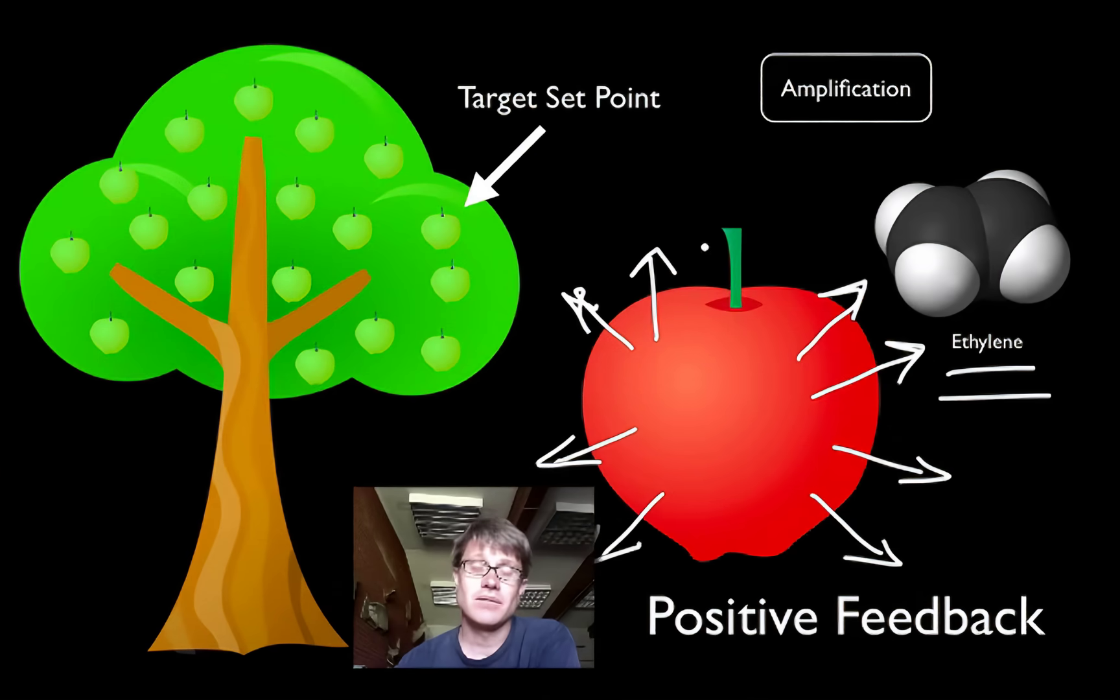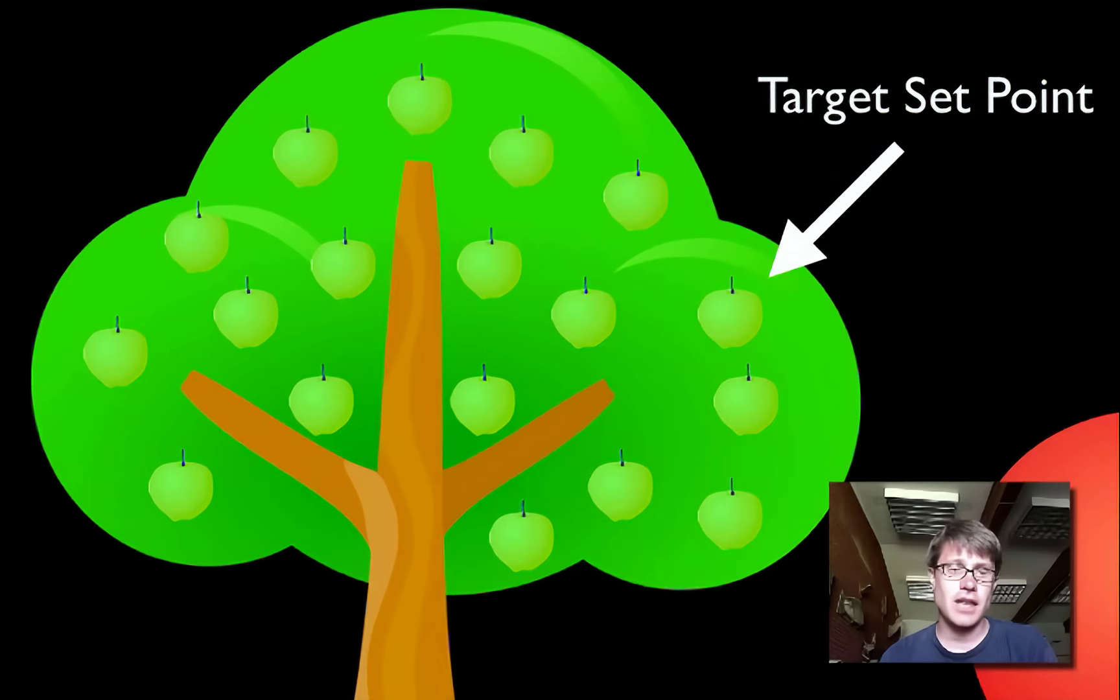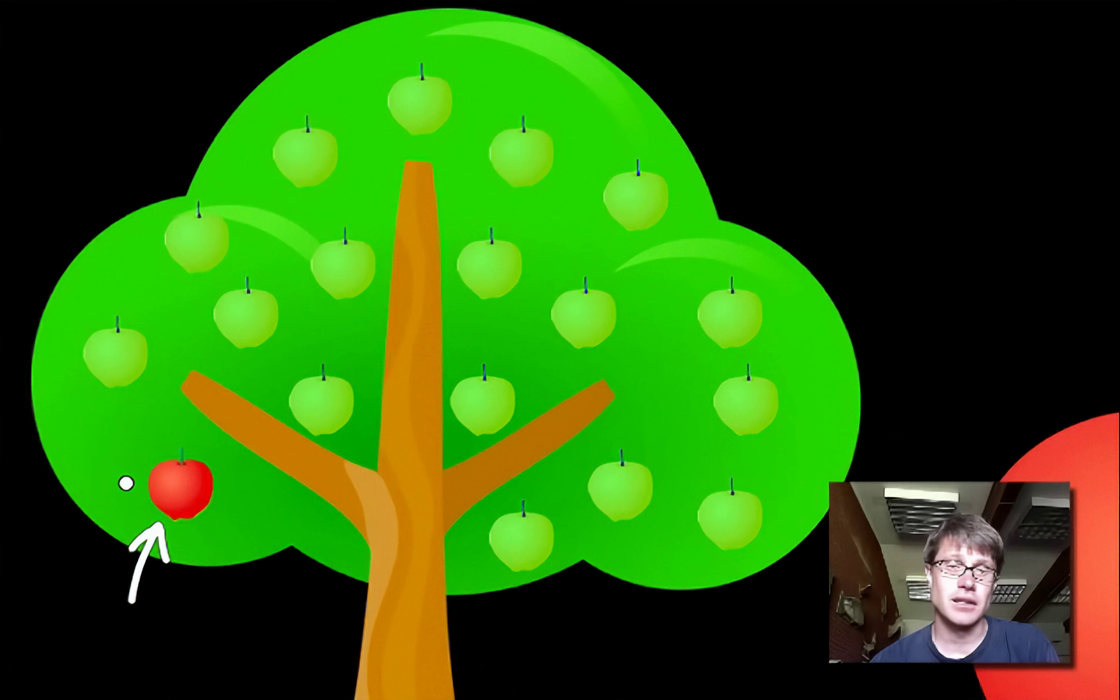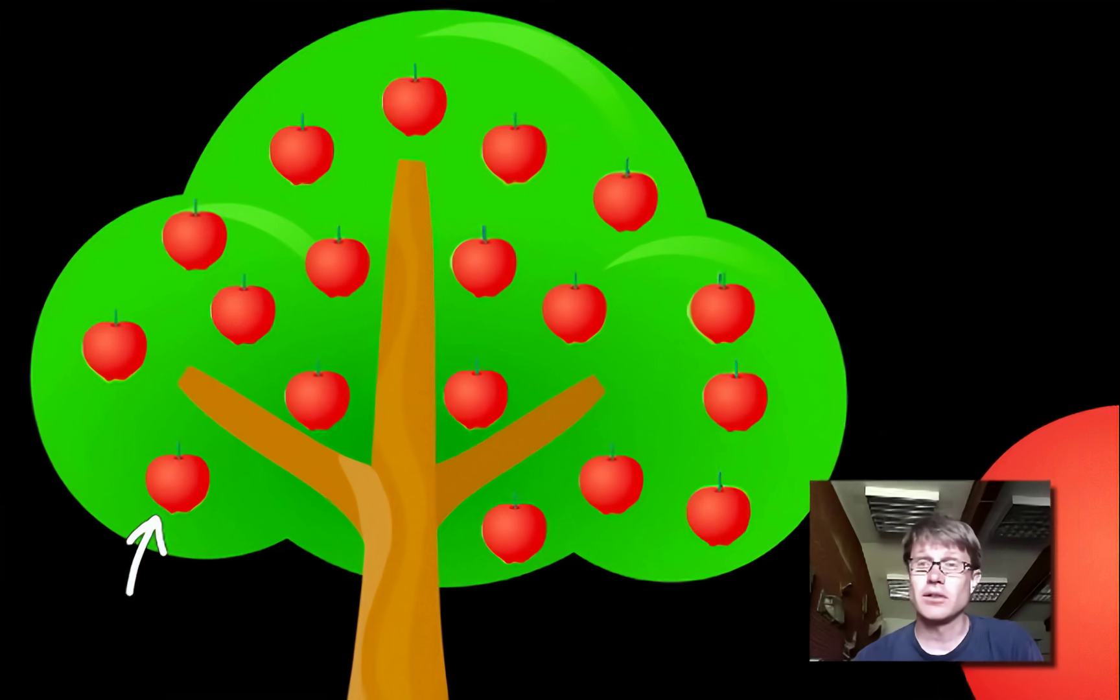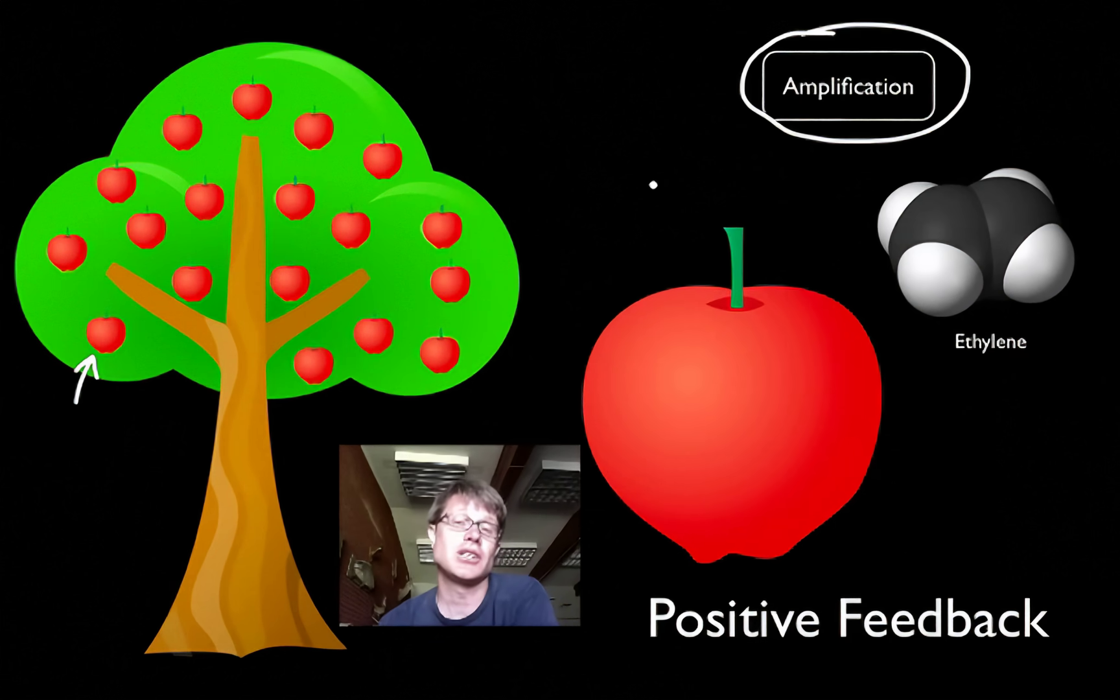If you take one nasty over-ripened apple and put it in a barrel of apples that aren't ripe at all, they will all ripen as a result of that ethylene. So one bad apple can really spoil the whole lot. How is this an example of positive feedback? That first apple will become ripe and start giving off ethylene. That ethylene is going to be picked up by apples right next to it. They're going to create more ethylene, which is going to create more ethylene, which is going to create more ethylene. Through this positive feedback loop or amplification, all of a sudden all the fruit on the tree are ripe at the same exact time.